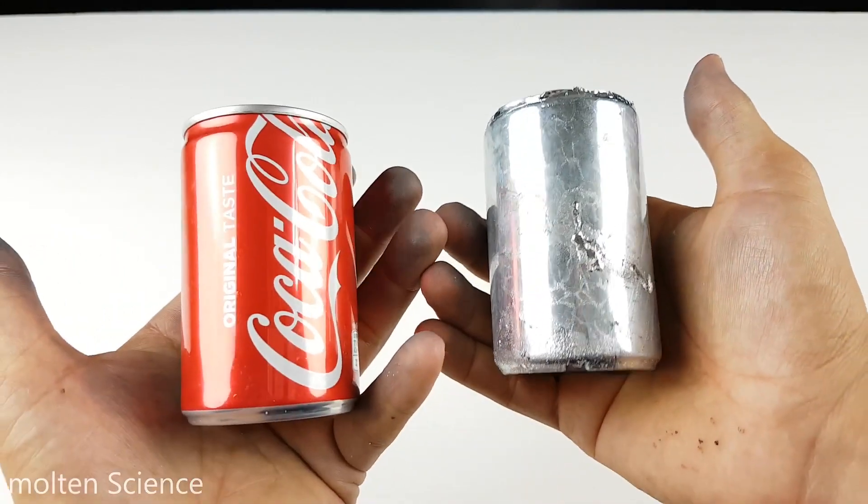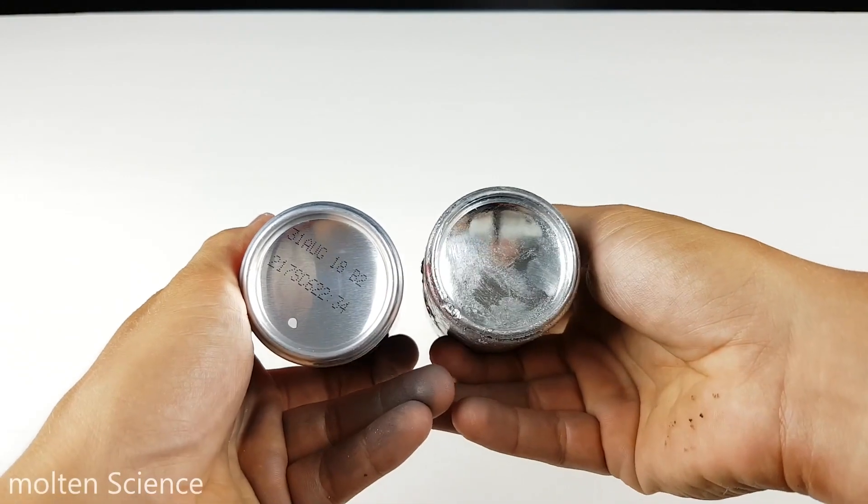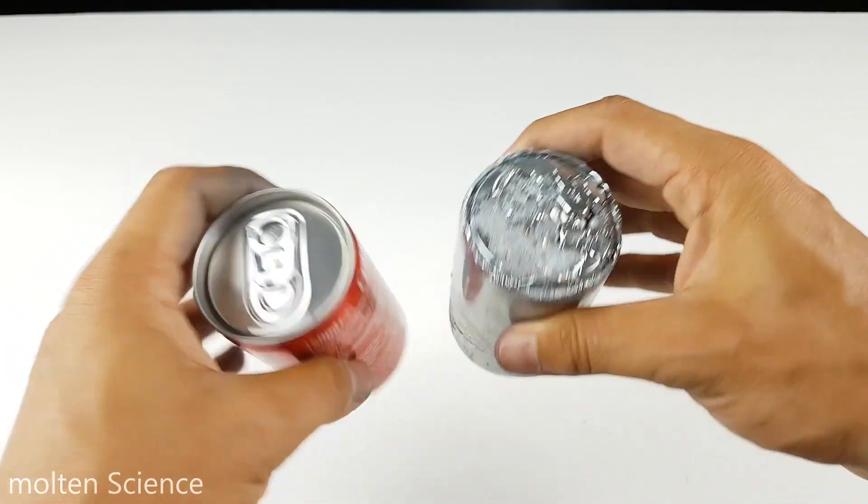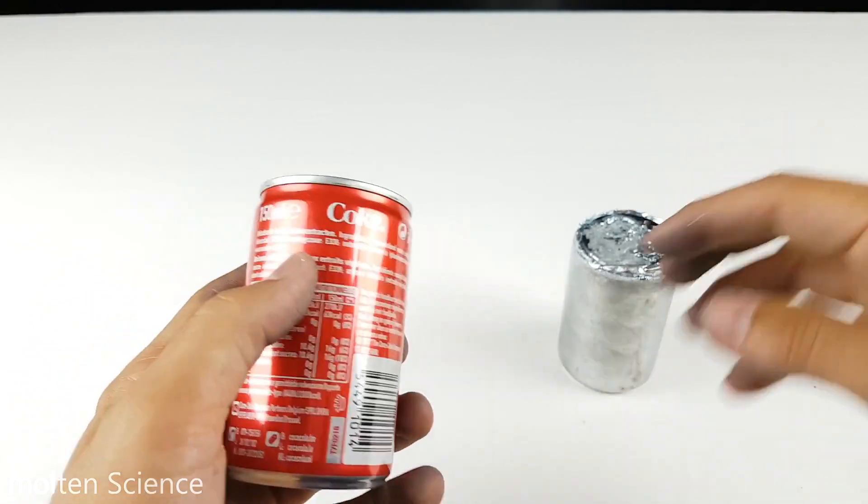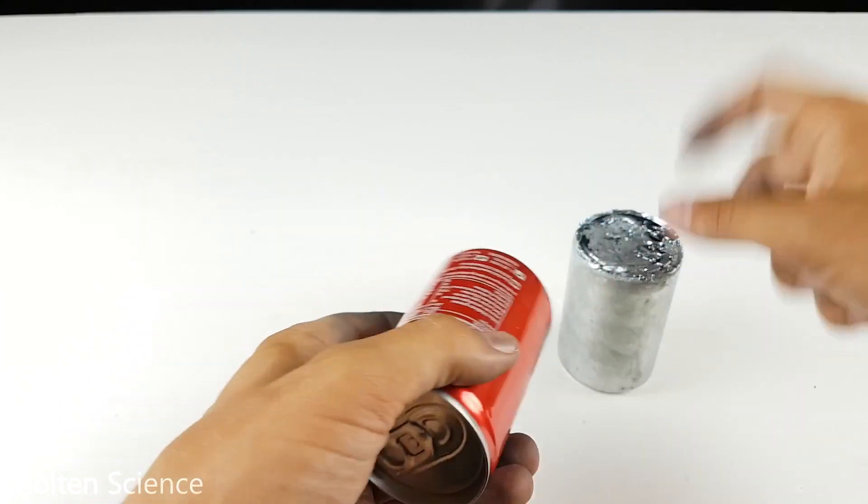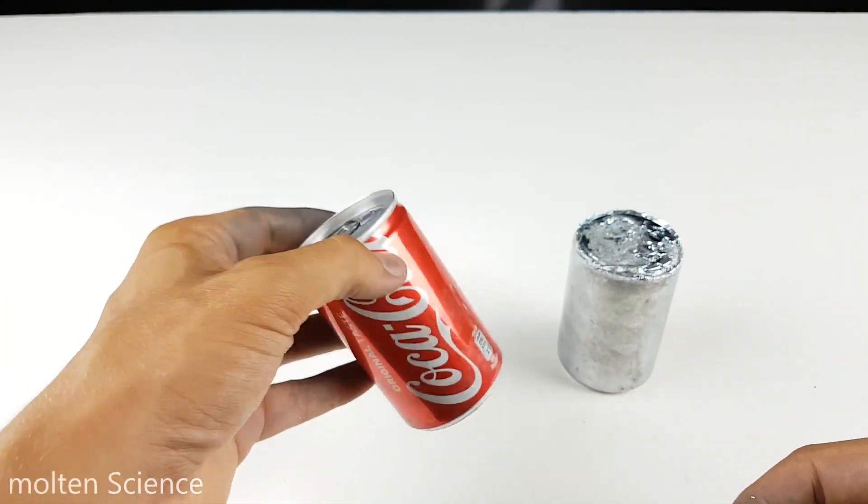So I was thinking, let's cut the top off and the bottom, put it in there, and then we have a silver Coca-Cola. So let's do this real quick.